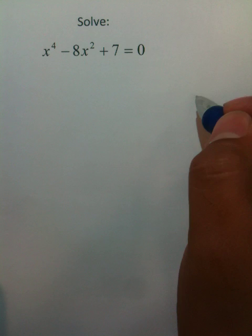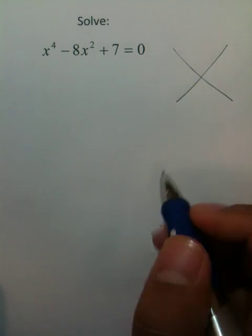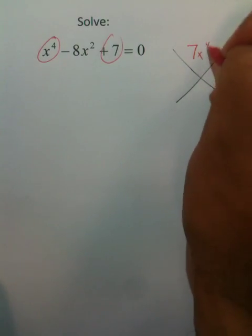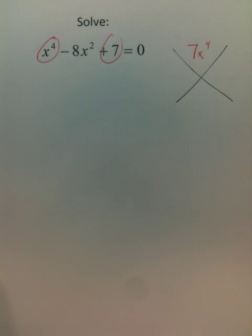Since it's a trinomial, I would use the guess and check method, which I call the magic X. If you need more formal definitions or explanations on how I'm using this technique right now, I have other videos. I suggest you watch them.